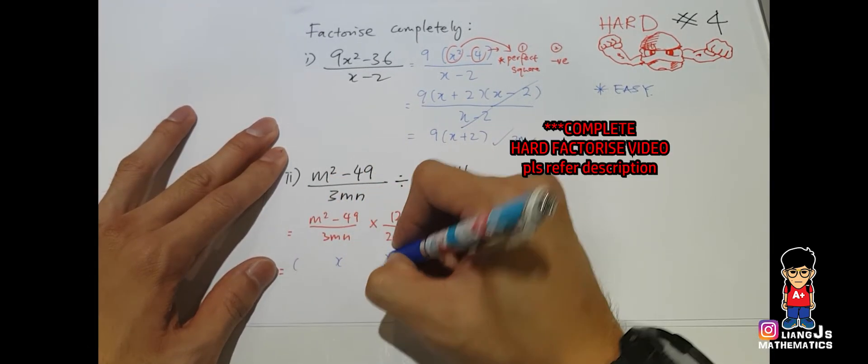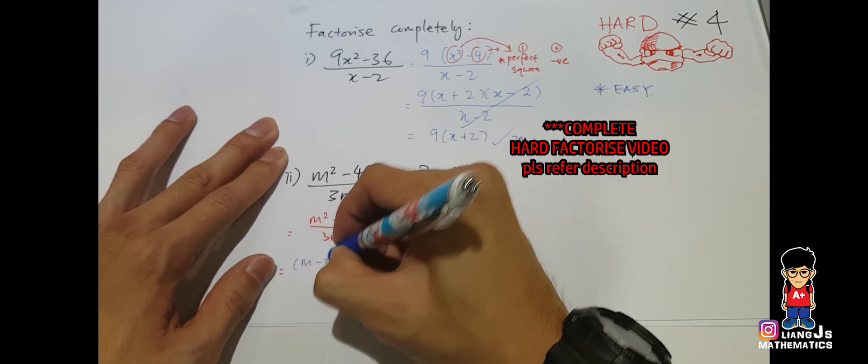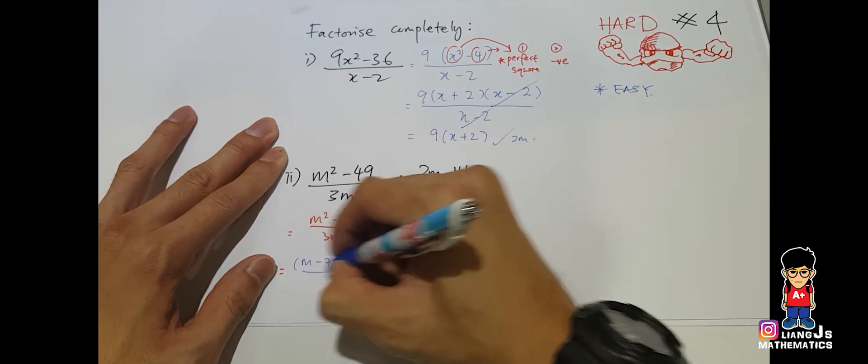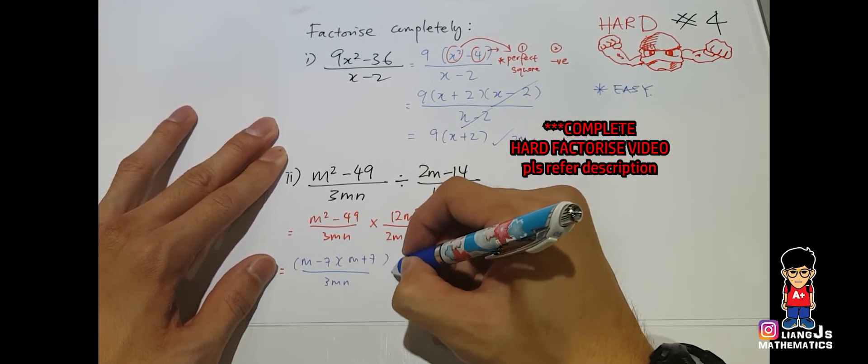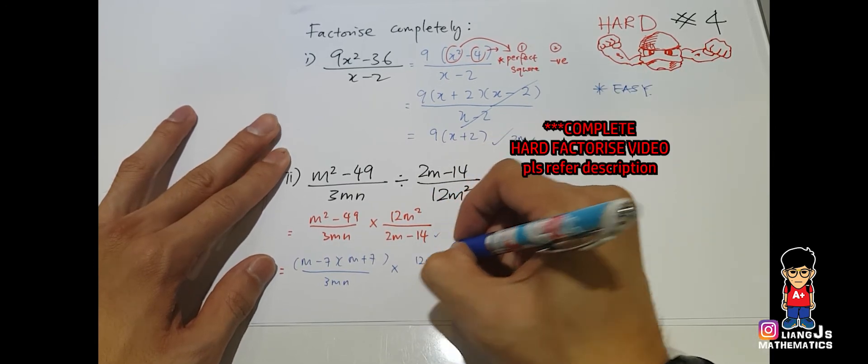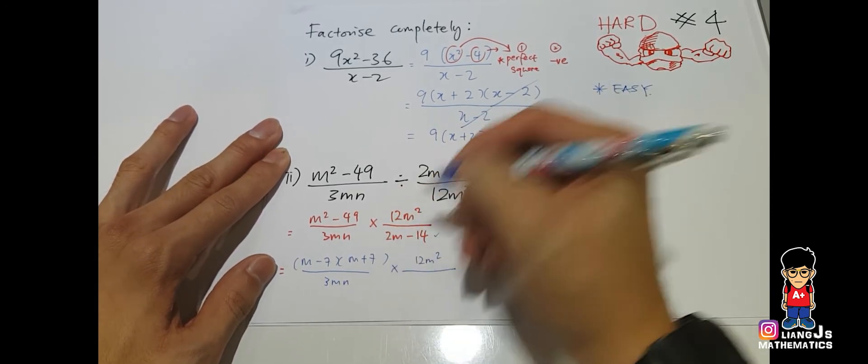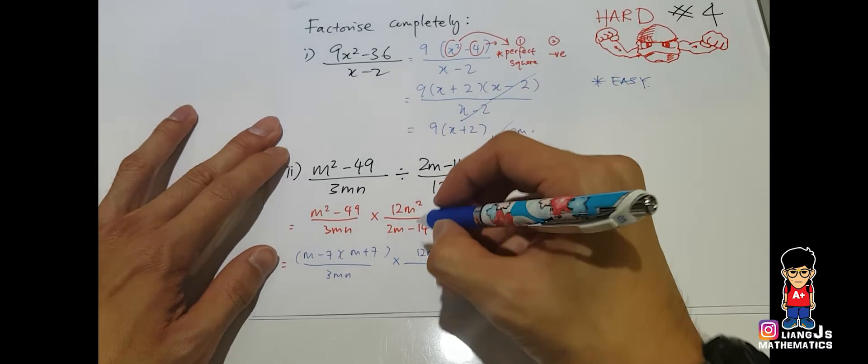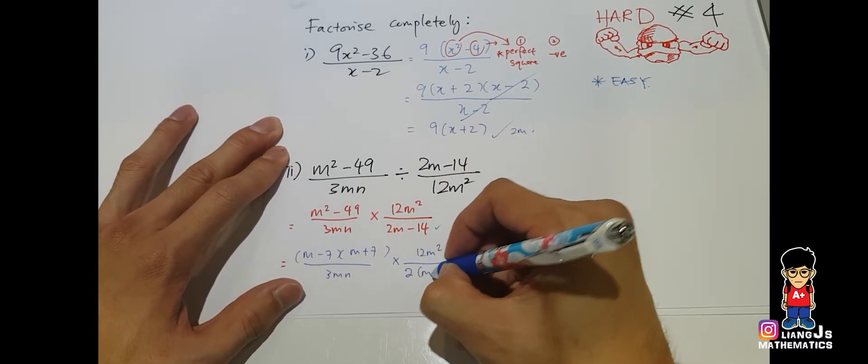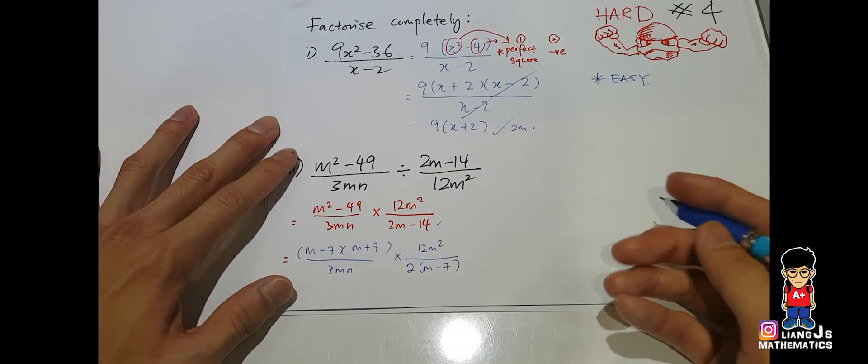So, I will straight away convert into two brackets. M minus 7 and M plus 7. Over 3mn. Times with, 12m square. Over. The thing comes really, you have to apply easy factorize. So, 2m minus 7.